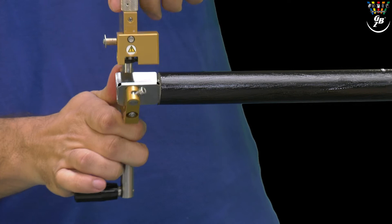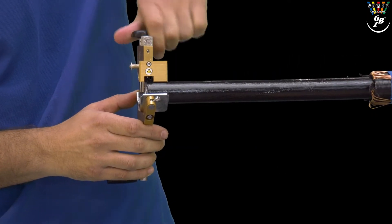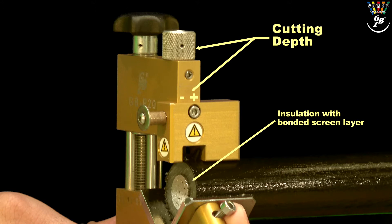The peeling tool GBP20 has to be mounted on the cable. Now we can adjust the cutting depth. A part of insulation has to be removed too.